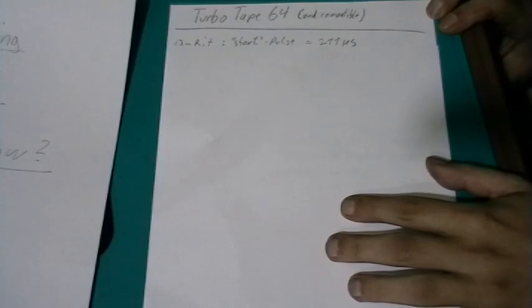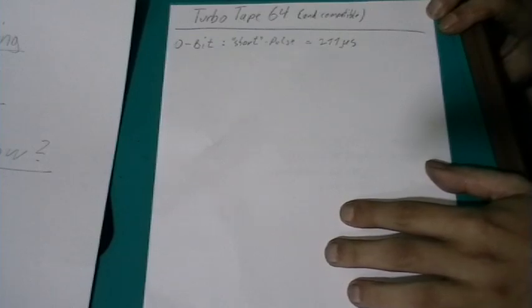Basically work on the same principle. The pulse length vary to make the tape better suitable to be copied on mass production lines. But the basic principle is most of the time the same. But I only cover turbo tape 64 in this video. So how does it work?